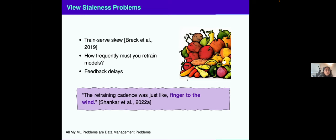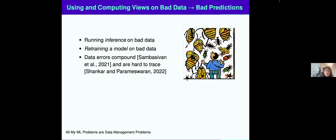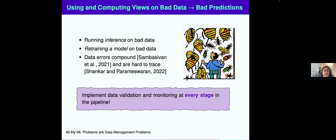Then we also have view correctness problems. If I run inference on bad quality data, if I retrain a model on bad quality data, all ensuing predictions from that model are also going to be bad. I have a paper on that coming up soon. Data errors really compound over time. If you have error ingestion, the error just grows as you move throughout the pipeline. You got to implement data validation and monitoring at every stage in your pipeline.